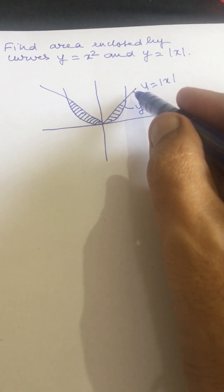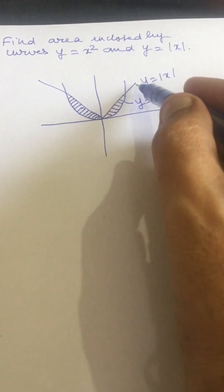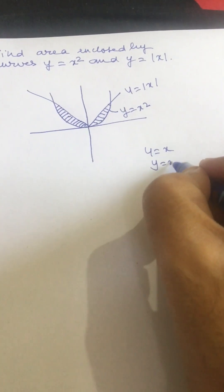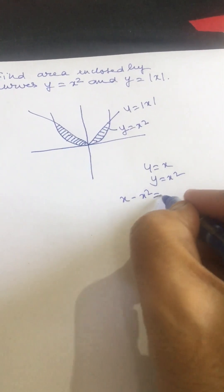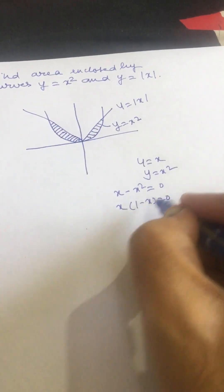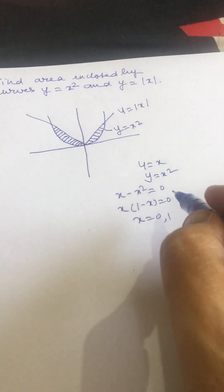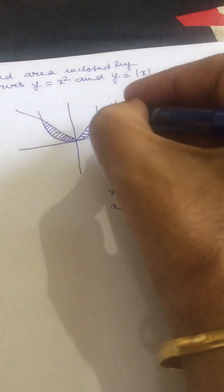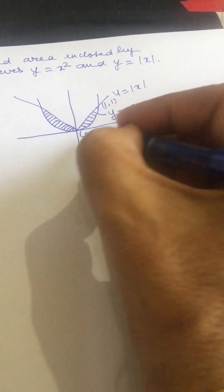If we combine the two lines, y equals absolute value of x, otherwise this line is y equals x, and this curve is y equals x squared. So we can write x minus x squared equals 0, giving x equals 0 or 1, and y equals 0 or 1. So the intersection points are (1,1) and (0,0).